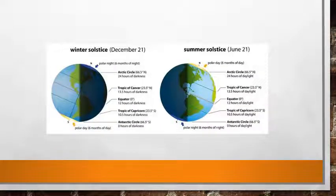The word solstice is derived from a Latin word meaning the sun standing still. Starting from March 21st when the rays fall vertically at the equator, as the earth continues to revolve the rays gradually become vertical towards the Tropic of Cancer. On June 21st the rays fall vertically at the Tropic of Cancer. Then on September 23rd they fall vertically at the equator again, and in December they fall vertically at the Tropic of Capricorn.